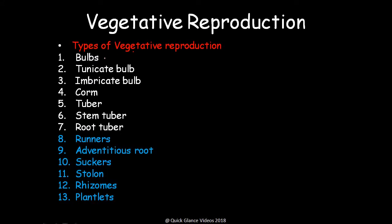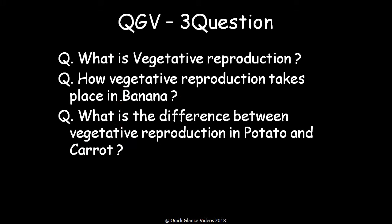In this first part of the video, we have covered bulbs, tunicated bulb, imbricate bulb, corm, tuber, stem tuber, and root tuber. In the second part, we will cover runners, adventitious roots, suckers, stolon, rhizome, and plantlets. Some questions to answer in the comments: What is vegetative reproduction? How does vegetative reproduction in banana take place? What is the difference between vegetative reproduction in potato and carrot? Keep watching the next video.